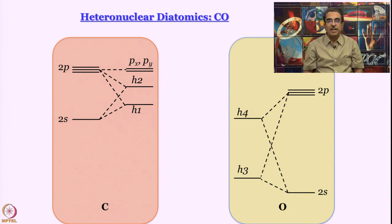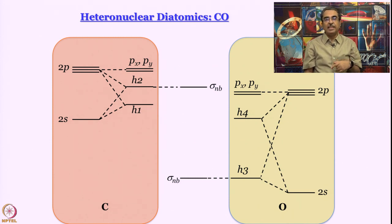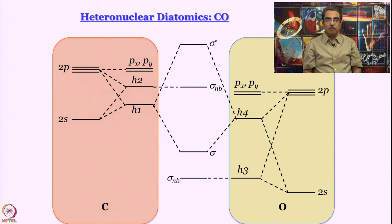Now, what happens? See H3 has such low energy. So, even though symmetry is right it cannot form a bond, it remains as a non-bonding orbital. Similarly, H2 has too high an energy so that remains a non-bonding orbital. The only difference is that the H2 orbital is a non-bonding orbital on carbon and the H3 orbital is a non-bonding orbital on oxygen. H1 and H4 are both sigma kind of orbitals. The energies are close enough. So, they can give you sigma and sigma star molecular orbitals.